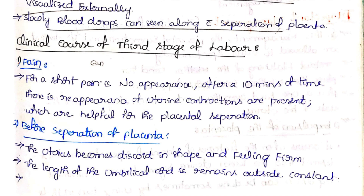Before separation of the placenta, the uterus becomes discoid in shape and feels firm. The uterus sits below the umbilicus in a discoid, firm shape. The length of the umbilical cord remaining outside remains constant before placental separation.